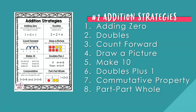Strategy seven: commutative property — the order of the numbers added does not change the sum. For example, five plus three equals eight and so does three plus five equal eight. Strategy eight: part, part, whole — the whole equals one part plus one part, and this leads into subtraction. For example, one part plus two parts equals three whole. If you want the addition strategies poster resource, you can find it in the link to download in the description of this video.